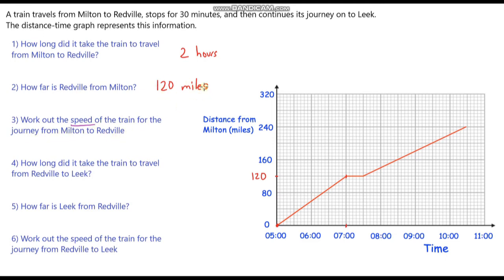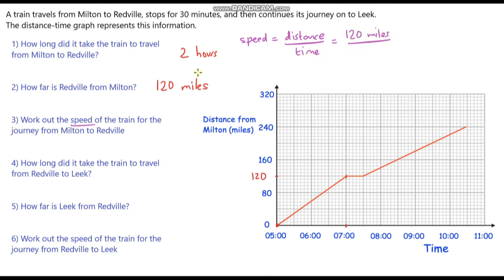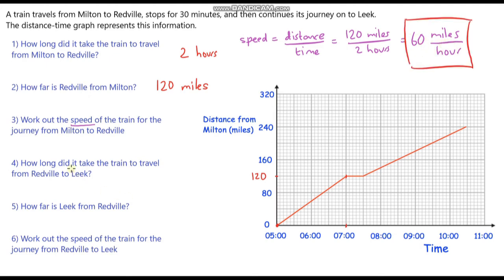Question three: work out the speed of the train for the journey from Milton to Redville. The distance is 120 miles and it takes 2 hours. To work out the speed, we do the distance divided by the time. Speed equals distance divided by time — so that's 120 miles divided by 2 hours. 120 divided by 2 is 60, and the units are miles per hour. So the speed is 60 miles per hour.